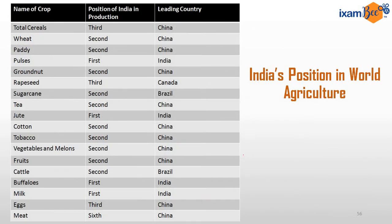India's position in world agriculture is sometimes important. In case of pulses, India is the leader. In case of jute, India is the leader. In case of buffaloes and milk production, India is a leader. For most other things, India is second after China. In case of meat production, India is sixth.